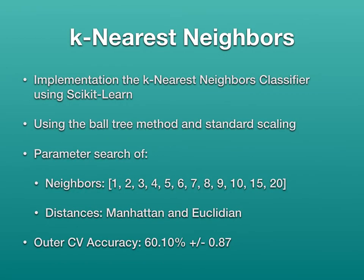For k-nearest neighbors, I implemented it using scikit-learn with the ball tree method and standard scaling. The parameter search was for the number of neighbors — one through ten, fifteen, and twenty — and the distance metrics Manhattan and Euclidean. From this, I got an outer cross-validation accuracy of 60.1% plus or minus 0.87%.